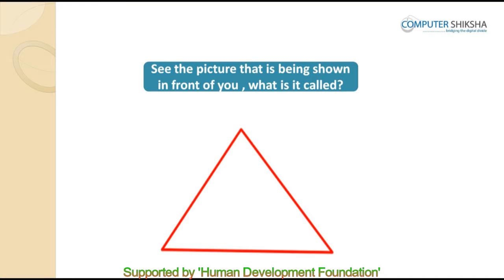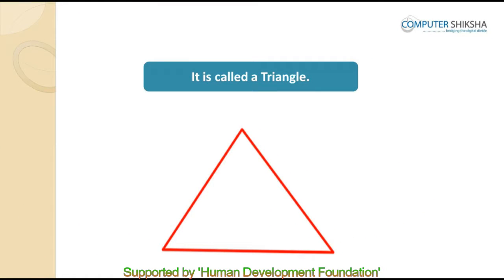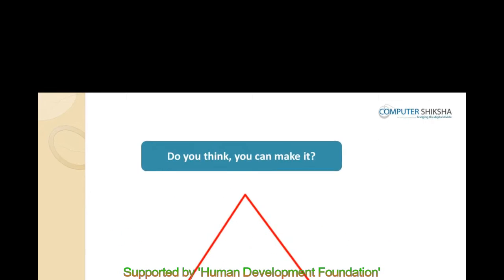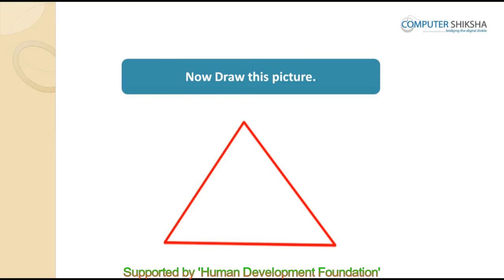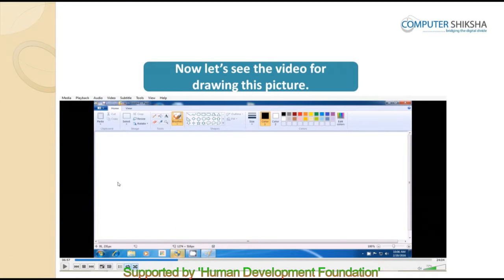See the picture that is being shown in front of you. What is it called? Yes, it's a picture of a triangle. By looking at the picture in front of you, do you feel you can make the same or not? To make this picture, first we will select the Line tool. Next, we will select a color from the color palette and complete our picture.